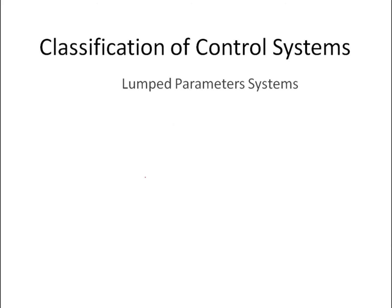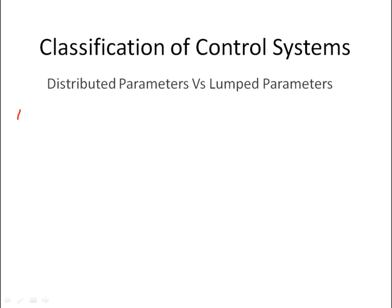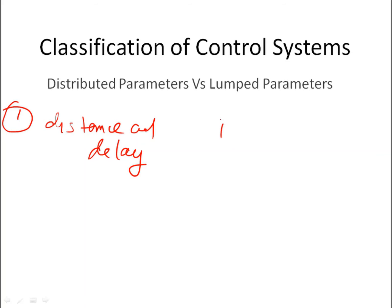On the other hand, for a lumped parameter system the complete system can be defined as a single unit. Even a very large system can be represented as a single unit g(t), where you give some input u(t) and get some output y(t). This is a lumped parameter system. The key comparison is that distributed systems have distance and delay, whereas a lumped parameter system is represented as a single unit with no such delay.